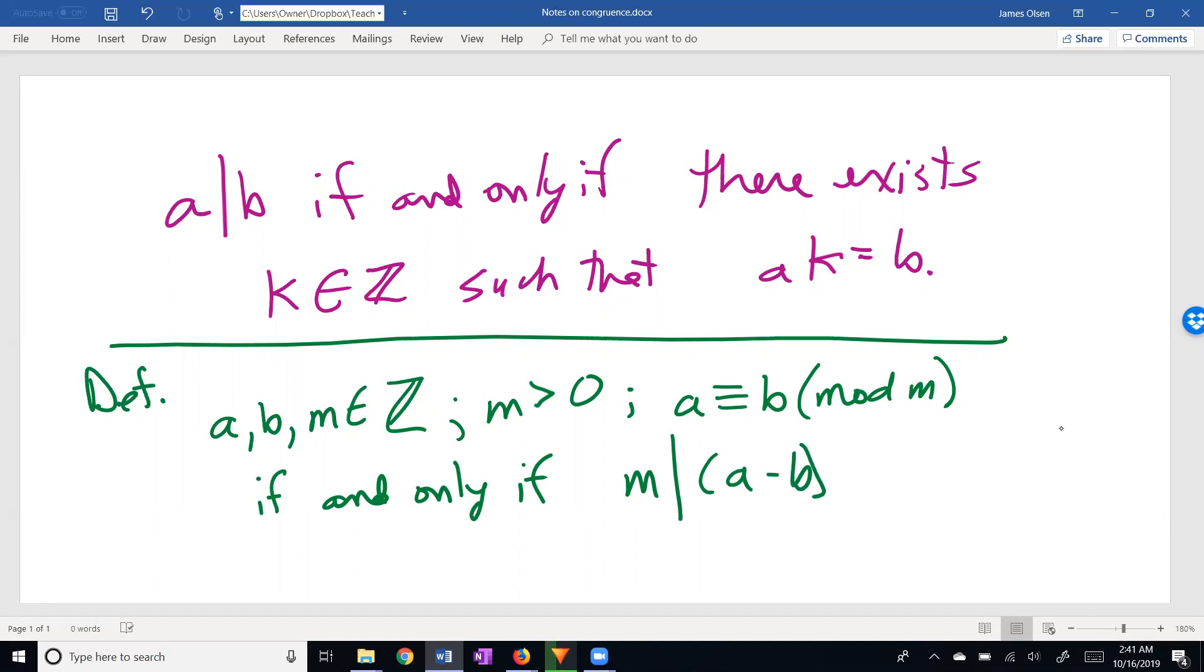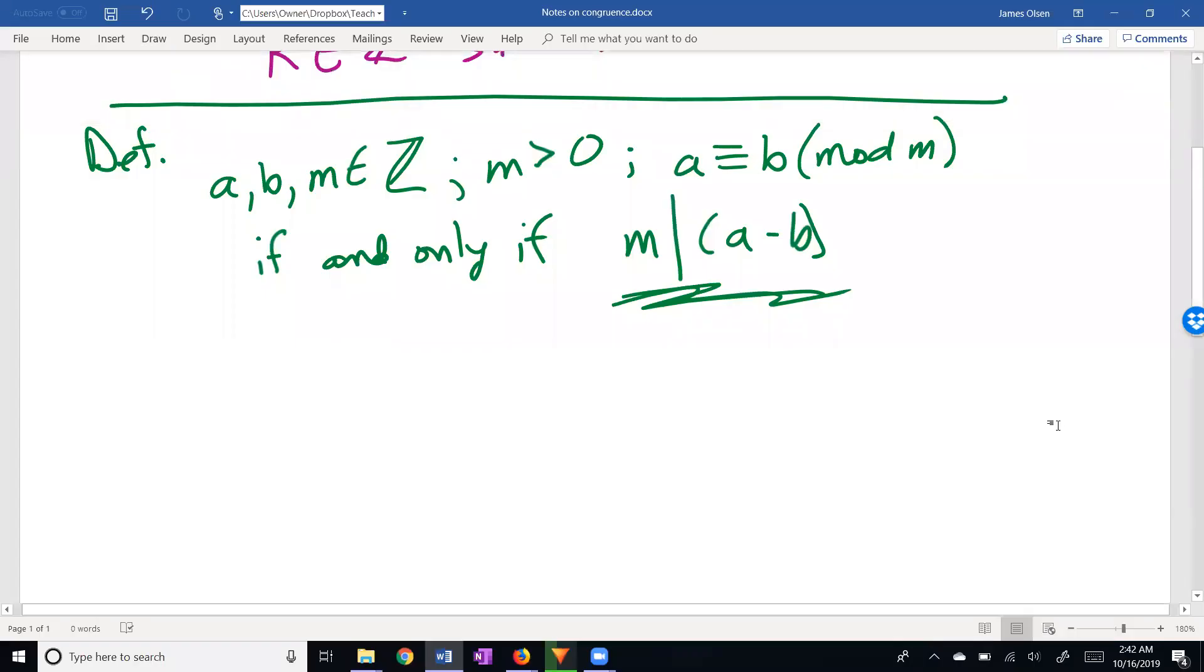This goes both ways as most definitions should. If you know that two numbers are congruent, then you know a divide statement. On the other hand, if you know a divide statement, you can conclude a congruence. Congruence modulo M is indicated with the three bars.